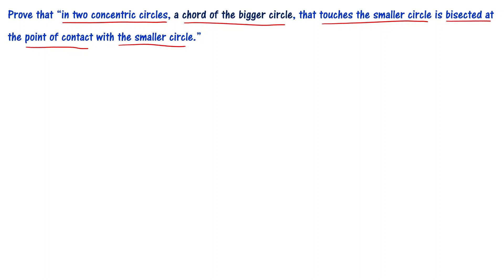First of all, we have two concentric circles. Concentric circles means two circles with the same center but different radius.